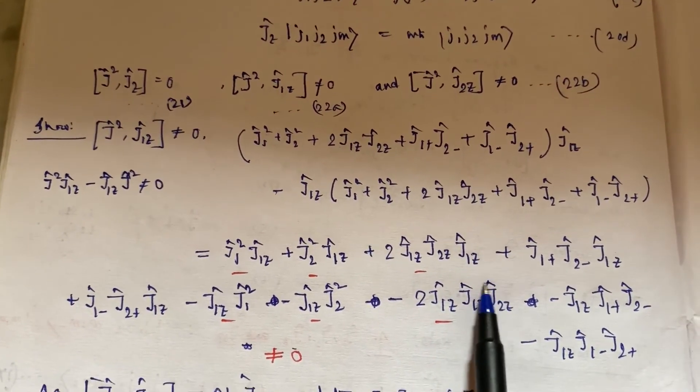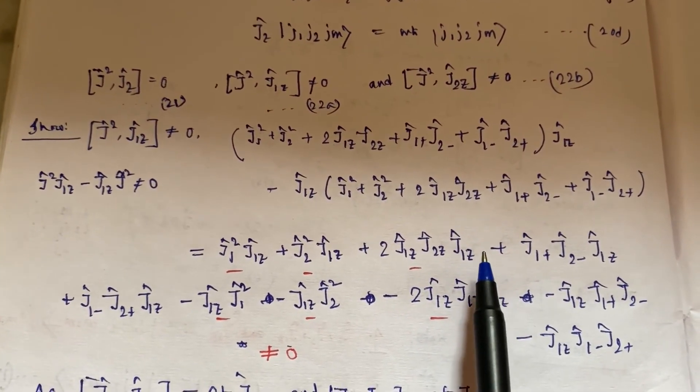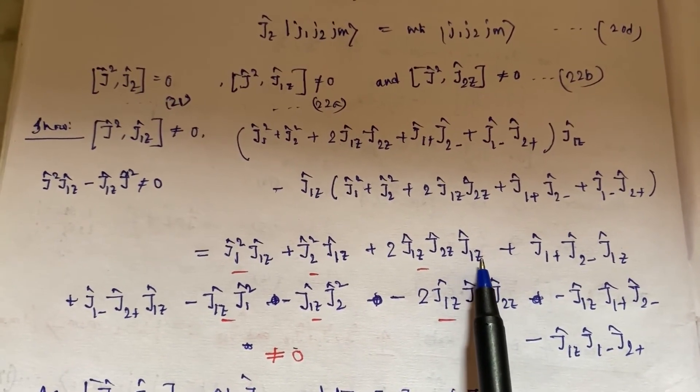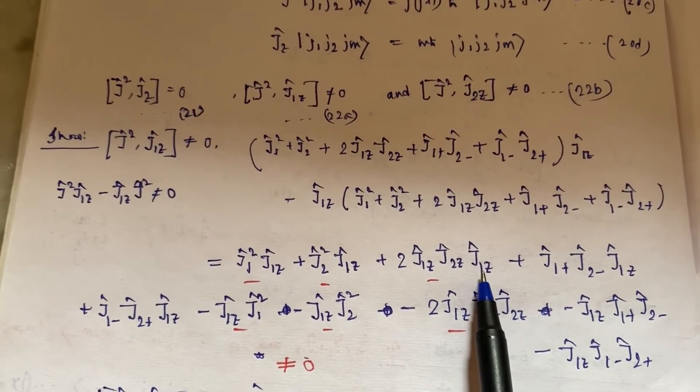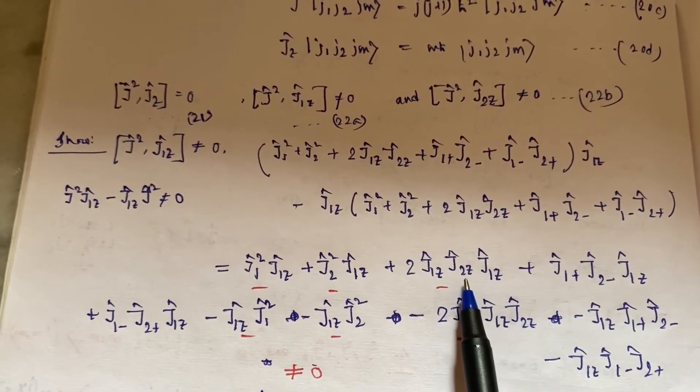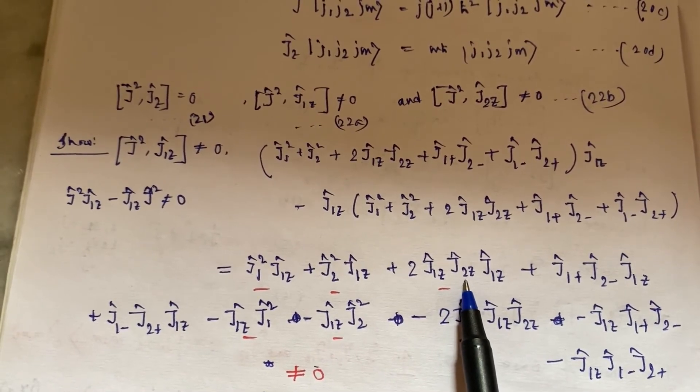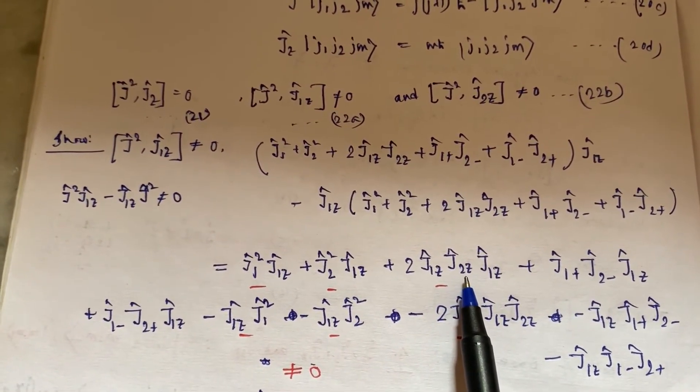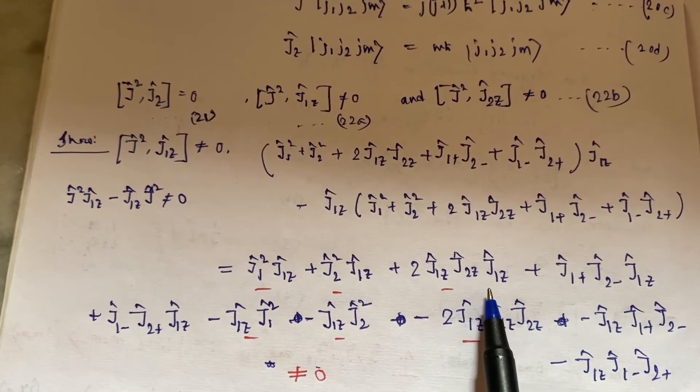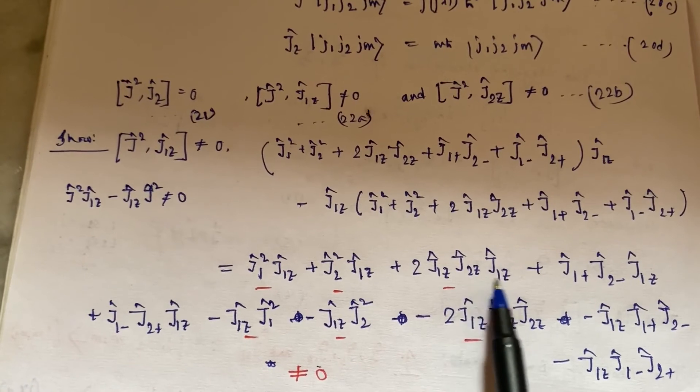Because I have just told you that in one basis, in the subspace formed by J₁ components and the subspace formed by J₂ components, there are components of J₁ and J₂ which form that subspace, and those components they commute with each other.